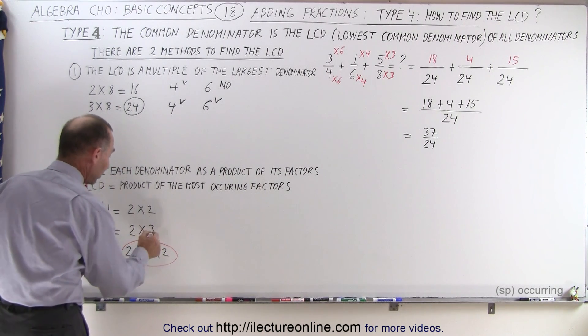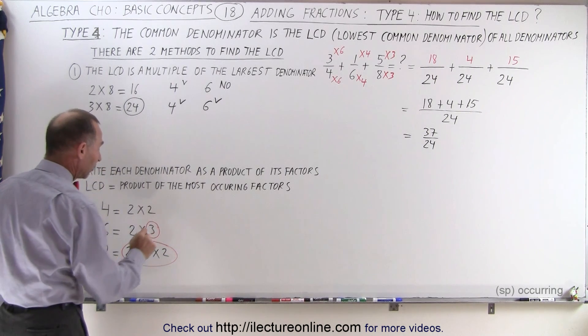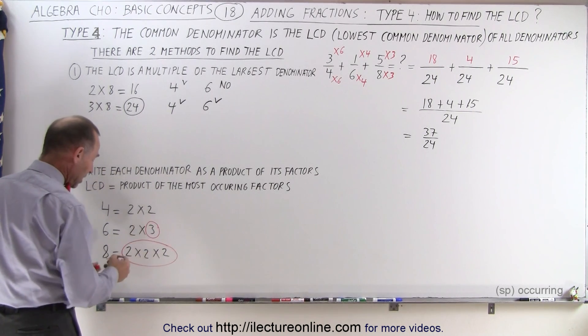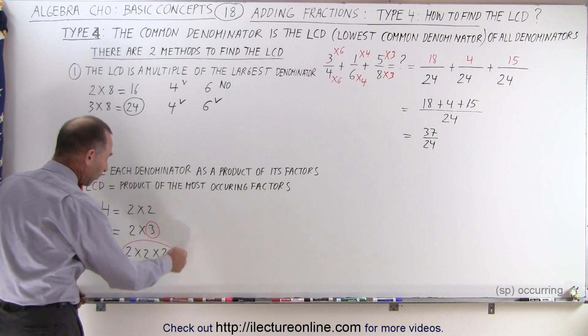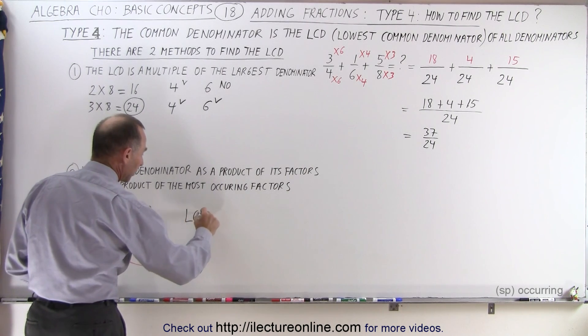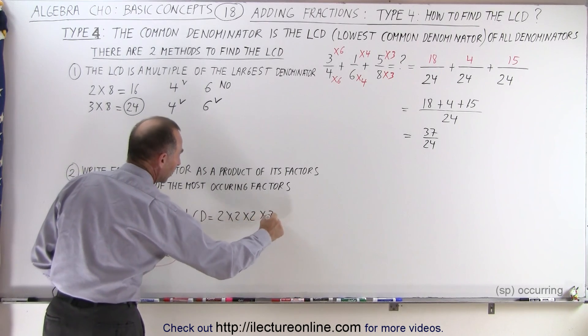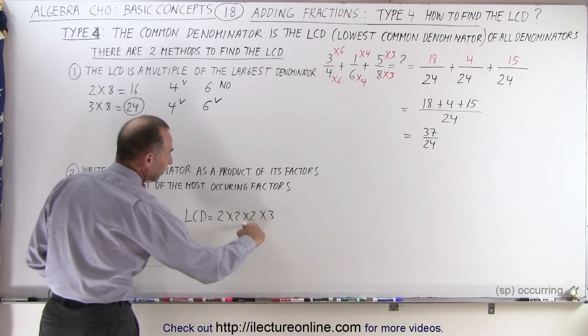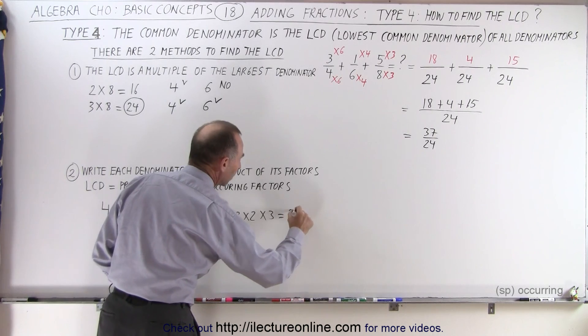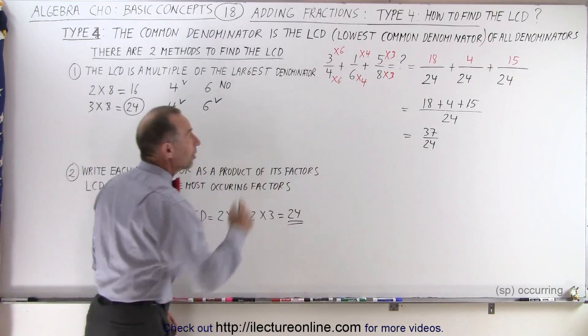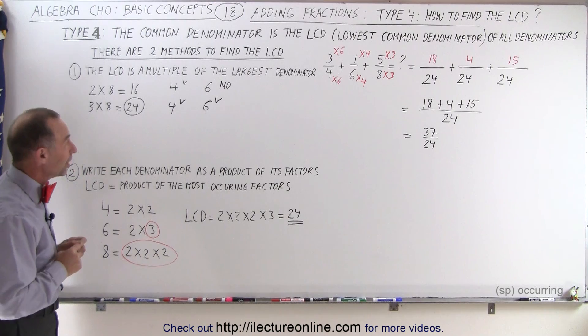So now you can see that the LCD will simply be the product of all the factors that we circled. So the LCD will be equal to 2 times 2 times 2 times 3. 2 times 2 times 2 is 8, times 3 is 24. And as you can see, you can find the LCD with that method as well.